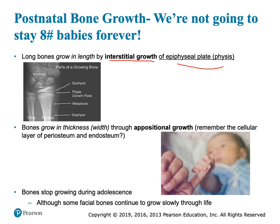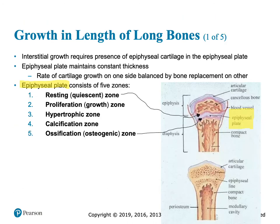Our interstitial growth — growth in length — is because of the growth plates. Growth in width is called appositional growth, driven by cells in the cellular layer of the periosteum and cells on the endosteum. In the epiphyseal plate, it's the cartilage that goes through mitosis. Once you're sexually mature, you stop growing — except some facial bones will keep growing.